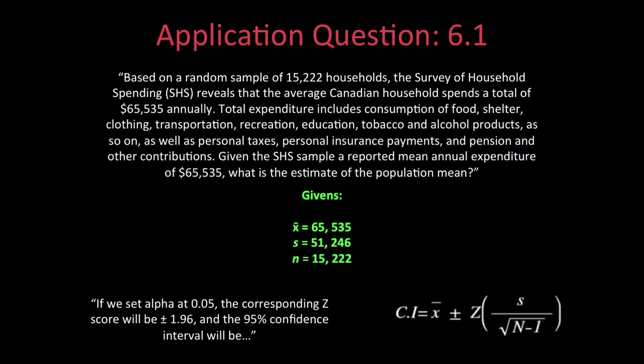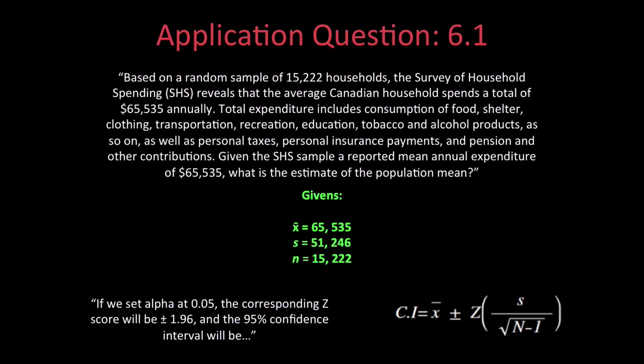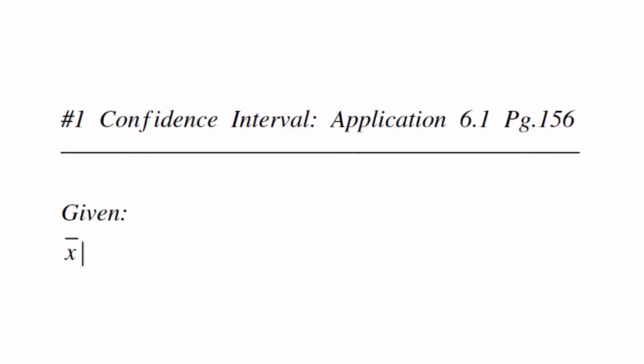If we set alpha at 0.05, the corresponding z-score will be plus or minus 1.96 and we will have a 95% confidence interval. The equation for confidence interval is: CI = x̄ ± z(s / √(n − 1)). Now let's solve 6.1.